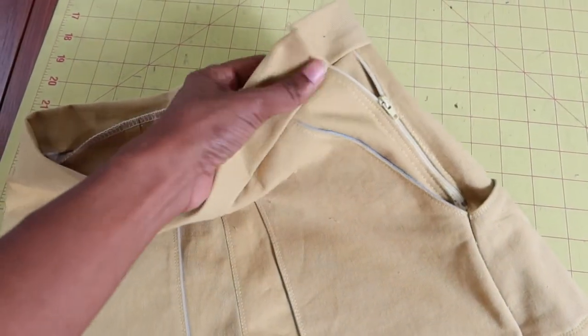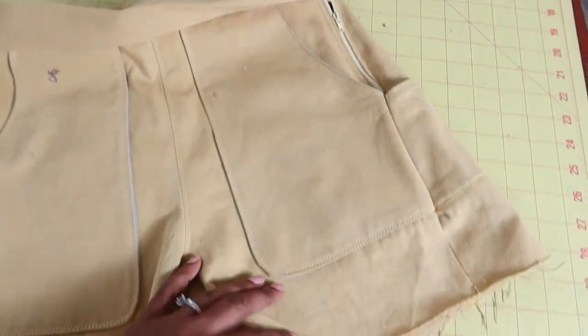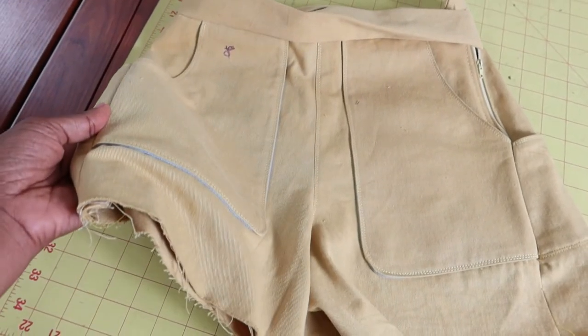Okay, so I just finished putting in the waistband. I just need to secure it to the top of the shorts. I will go in and put a button and a buttonhole, and then hem the shorts and show you what they look like on.